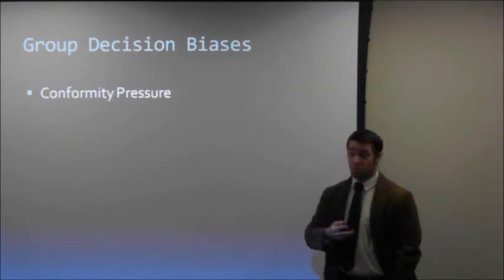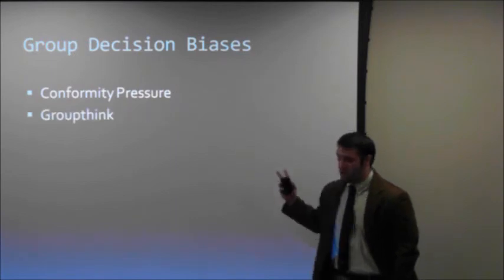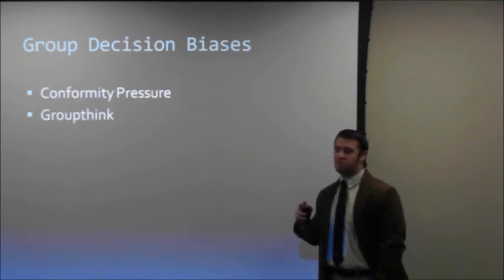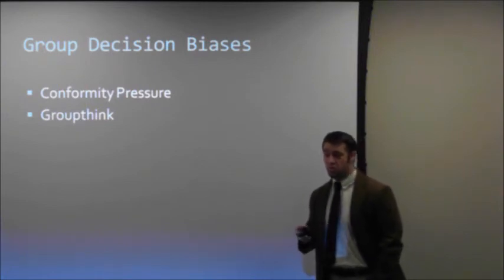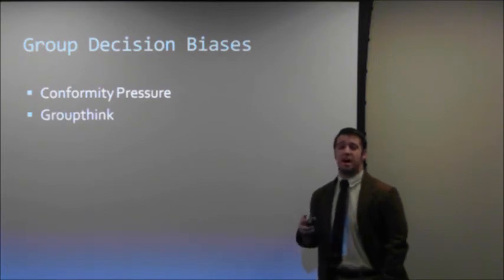Groupthink. Groupthink occurs when team members place consensus in getting along ahead of all other priorities, including making a good decision. In groupthink, the desire to agree becomes so dominant, it overrides our natural ability to think realistically about a situation.